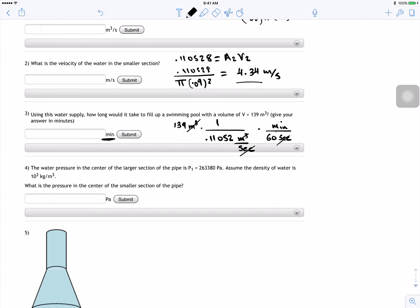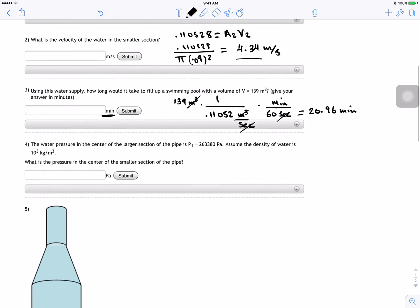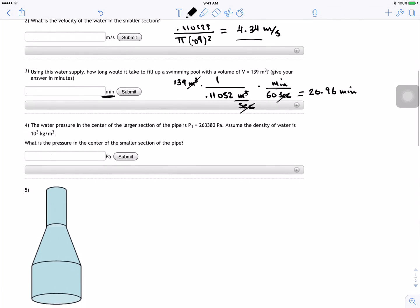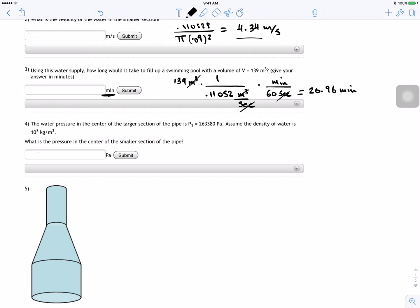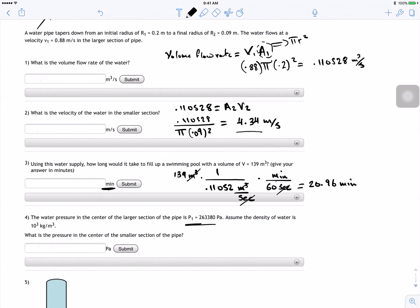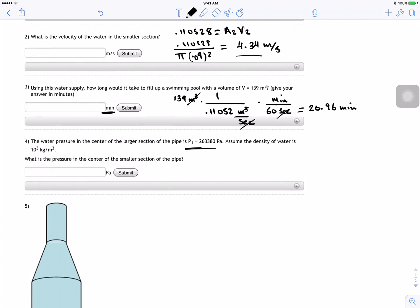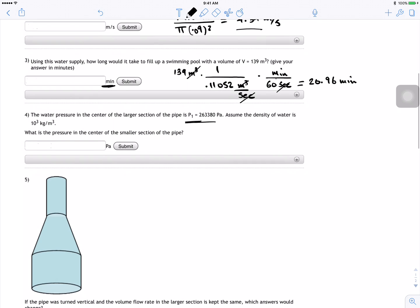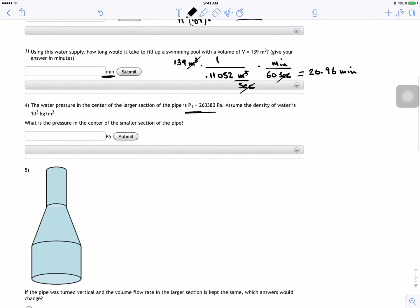And then we do times minute divided by 60 seconds because they want the answer in minutes. So the units will cancel out—this one will go up and then we'll cancel with the second. So from here we got 20.96 minutes. Cool.